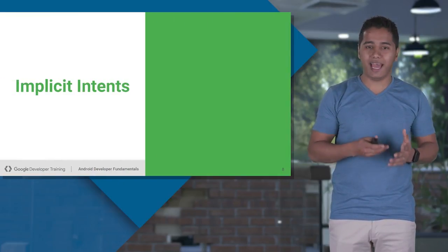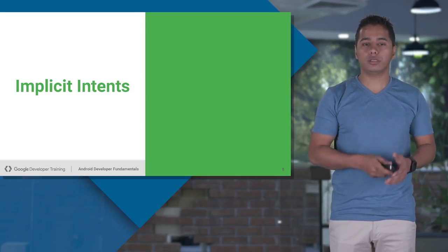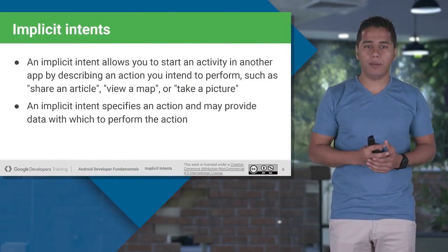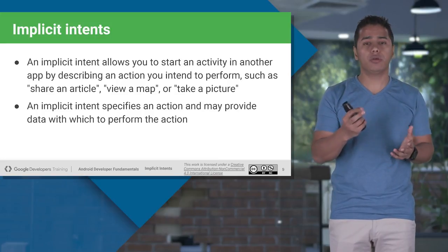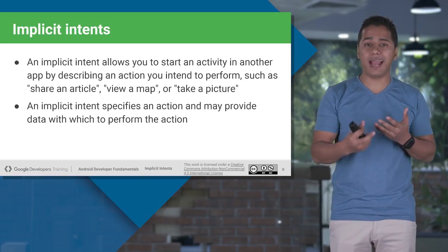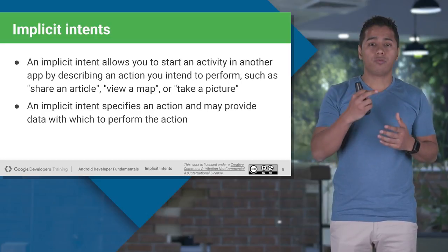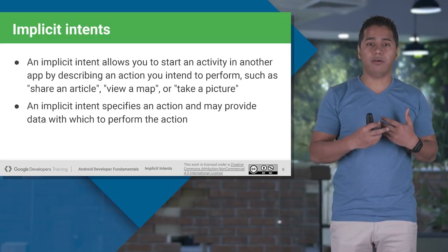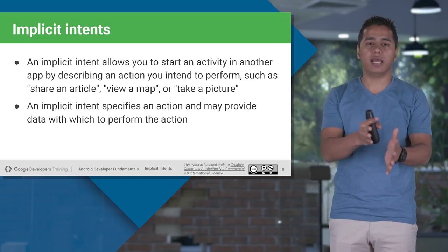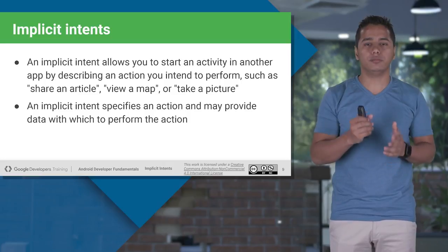In implicit intent, we don't have a source and destination. Implicit intents work with actions and data. For example, if I want to open up a map and show a particular location, I need a map application that can handle it. From my application, I will create an implicit intent, which will transfer me to the map application and open up the map activity. I didn't even need to know the name of the activity inside the map application — I was still able to open up the location.